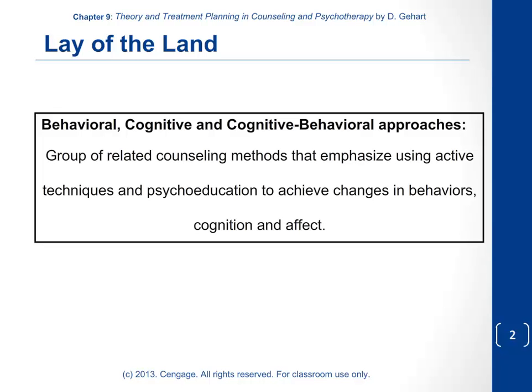Behavioral, cognitive, and cognitive behavioral approaches are a group of related counseling methods that emphasize very active techniques, a lot of psychoeducation, and focus on concrete, measurable changes in behavior, cognition, and affect. They have one of the most robust evidence bases in the entire field, having been researched for many years, and that is really part of the culture of the cognitive behavioral tradition — a culture of rigorous thinking and evaluating from an objective stance whether or not the approach is working.